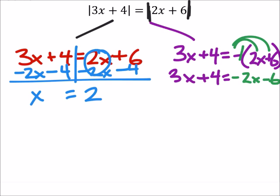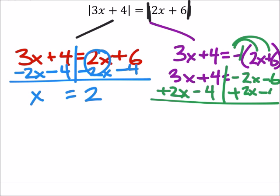And now we just need to solve for x. So it doesn't matter which side I put the x's on. I'm going to put them on the left again. So I'll add 2x to both sides and I'll subtract 4 from both sides.